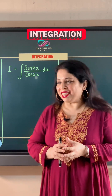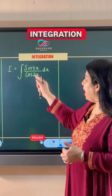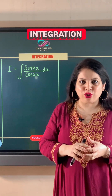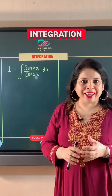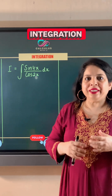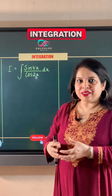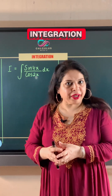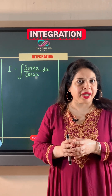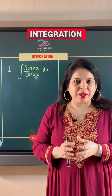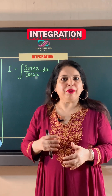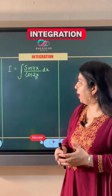In this integration question, we have sin 4x divided by cos 2x as the integrand. Whenever the integrand consists of trigonometric functions, we always make use of trigonometric identities to simplify the integrand.